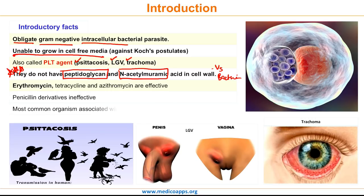And finally, Chlamydia is the most common organism associated with reactive arthritis.